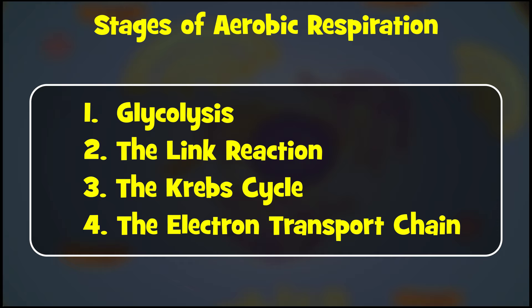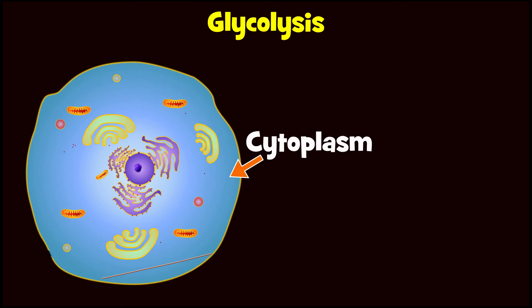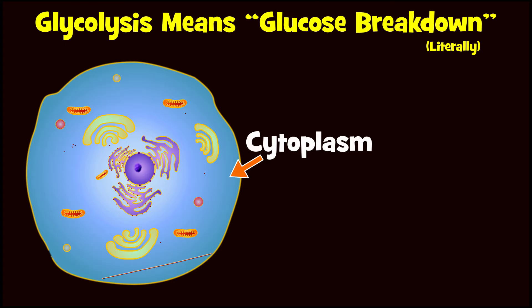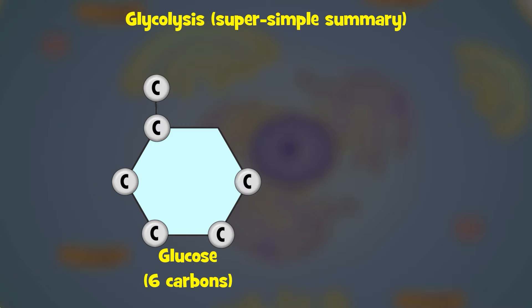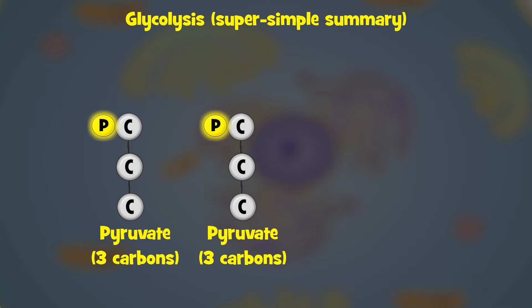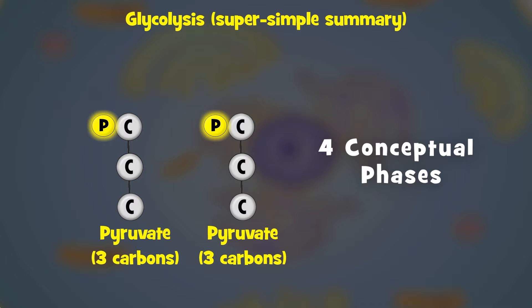Let's start with glycolysis. Glycolysis happens in the cytoplasm of the cell. It literally means glucose breakdown, since that is exactly what happens. Basically, glucose, a 6-carbon molecule, is broken in half to make two molecules of pyruvate, a 3-carbon molecule. This is actually a 10-step process, but we are going to focus on just four conceptual phases.